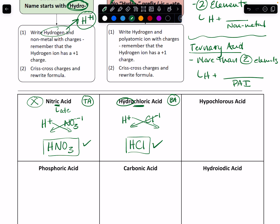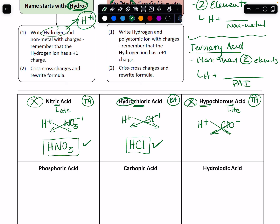Now we have hypochlorous acid. Now this is not hydro, so this is also going to be a ternary acid. So that means it ends in OUS — so the polyatomic must be hypochlorite. Plus one for the hydrogen ion, hypochlorite is ClO minus one. Cross our charges and we're going to get HClO. Plus one, minus one gives us an overall neutral molecule.